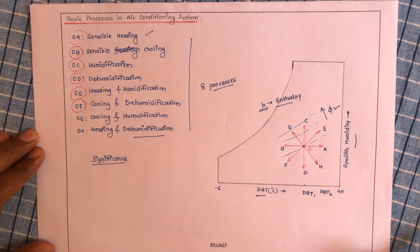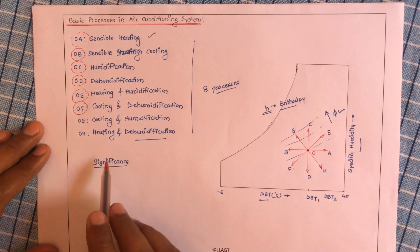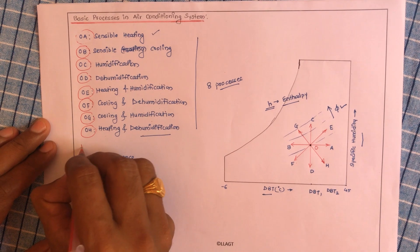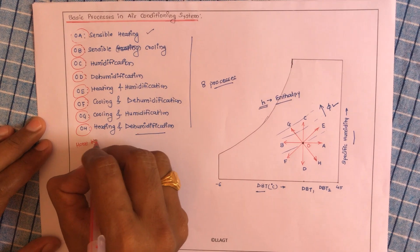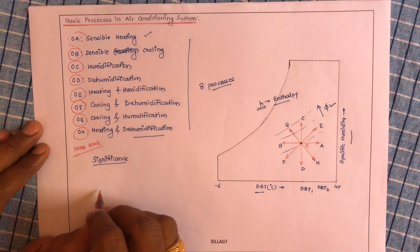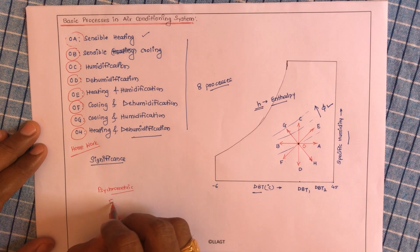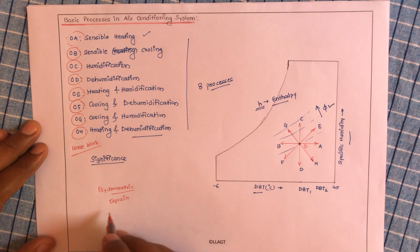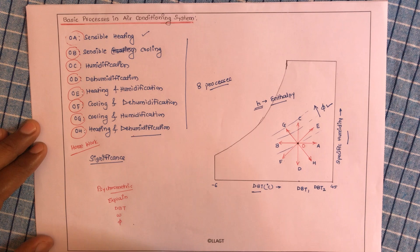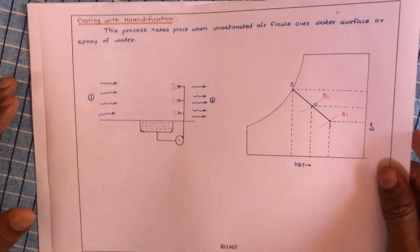Hello friends, welcome back to the online course on refrigeration and air conditioning. Up till now, the first six processes have been completed. In this lecture, we will complete the seventh process, that is cooling and dehumidification. The eighth process, heating and dehumidification, you have to take as homework — prepare the psychrometric chart and explain what is happening to dry bulb temperature, specific humidity, relative humidity, and enthalpy.